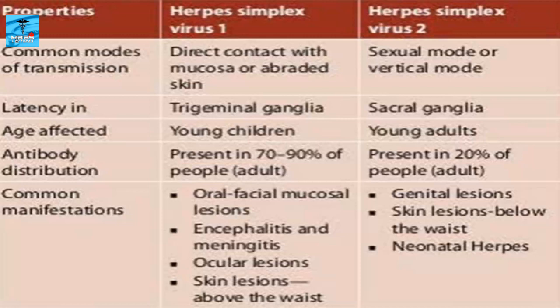Regarding antibody distribution, HSV1 antibodies are present in 70–90% of adults, whereas HSV2 antibodies are present in 20% of people. Common manifestations of HSV1 include orofacial mucosal lesions, encephalitis, meningitis, ocular lesions, and skin lesions above the waist. For HSV2, the common manifestations include genital lesions, skin lesions below the waist, and neonatal herpes.